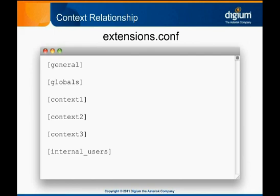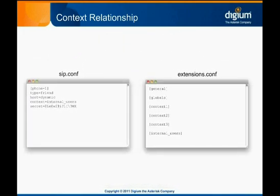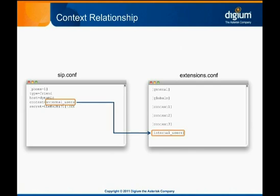In the previous module, we also specified a Context option for the configuration of our IP phone, which we set to Internal_Users. It is important to understand this relationship. The context configured for the phone defines the location in the dial plan where Asterisk will begin looking for the extension dialed by the user of the phone.